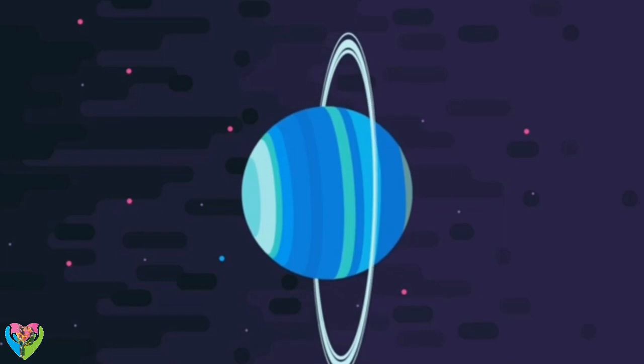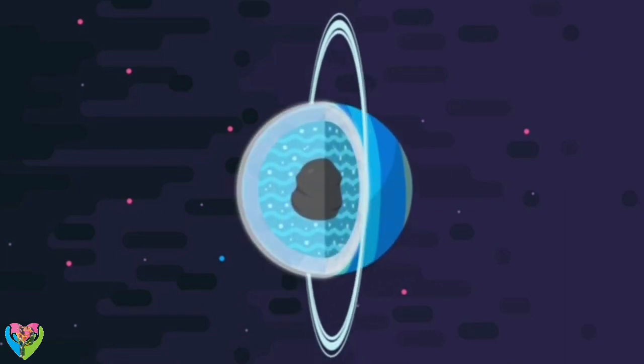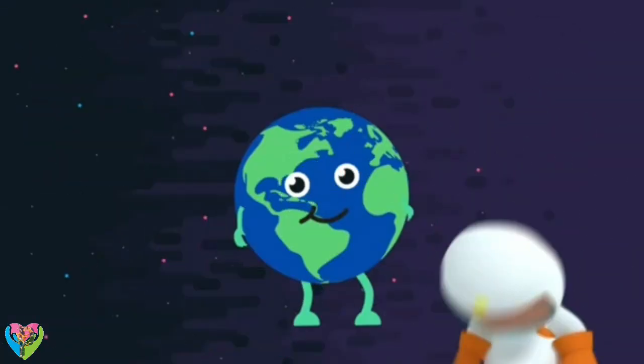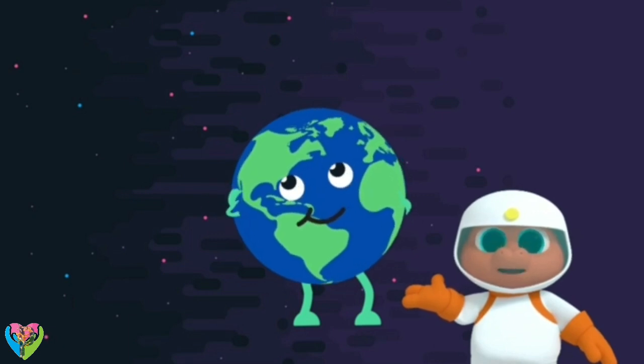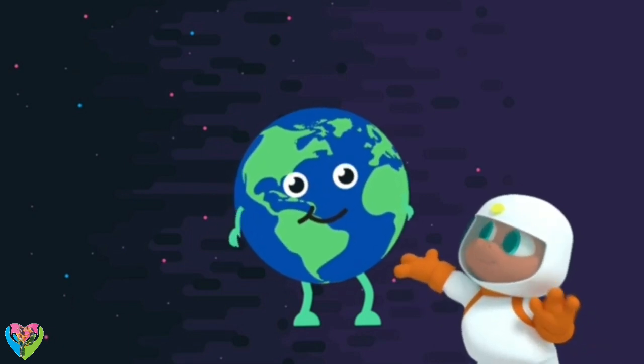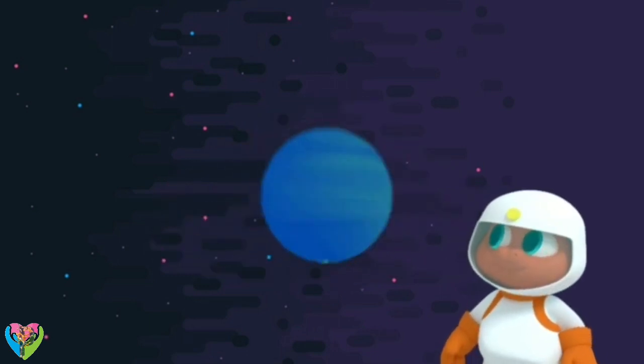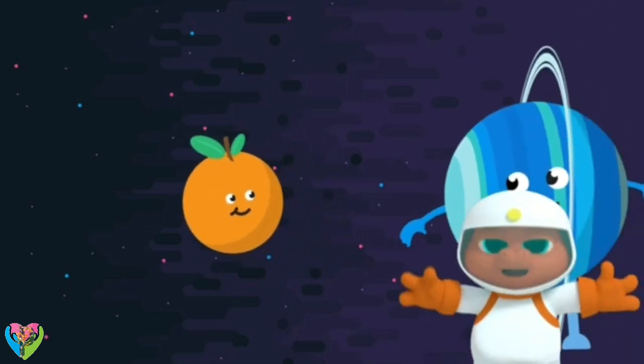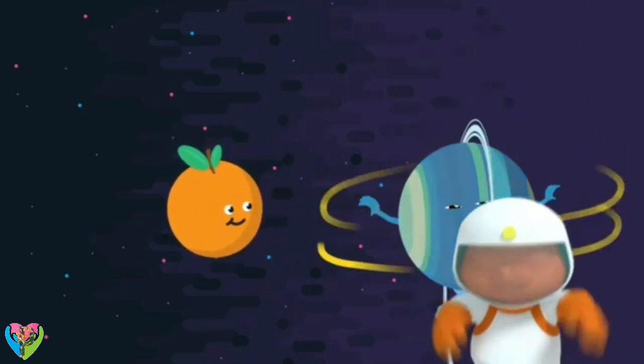It's what's called an ice giant, Gorby. That means it's made up of a slushy, icy liquid with rock and gas in the center. If Uranus is an ice giant, does that mean it's bigger than Earth? Uranus is four times the size of Earth. So if the Earth was the size of an orange, Uranus would be the size of a basketball!